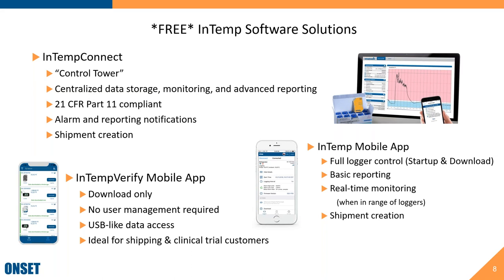The Intemp mobile app is your full control app — you have full control over the loggers. You can configure and start loggers as well as download them. You can get basic reporting directly in the app. It also allows for real-time monitoring when you are in range of those Bluetooth loggers — you can view as many loggers as are in range and view real-time data. You cannot view real-time data remotely. With the Intemp mobile app you are also able to do shipment creation.